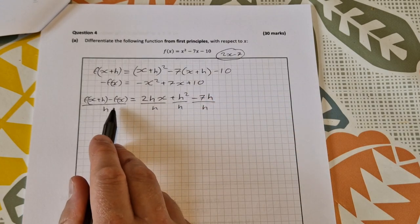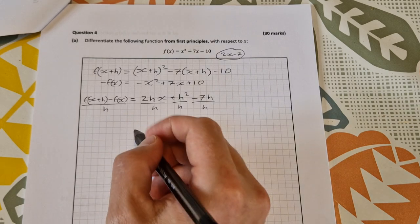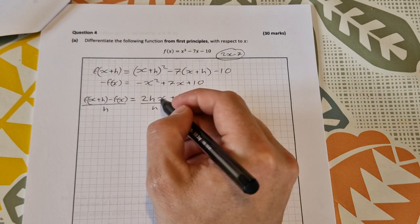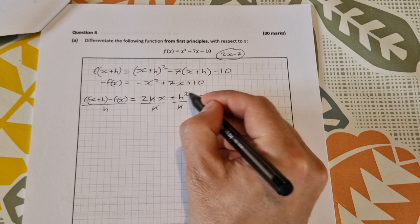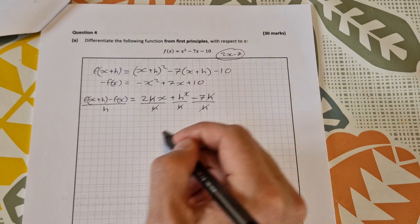h cancels throughout, so you get 2x + h - 7. Then you take the limit of that.